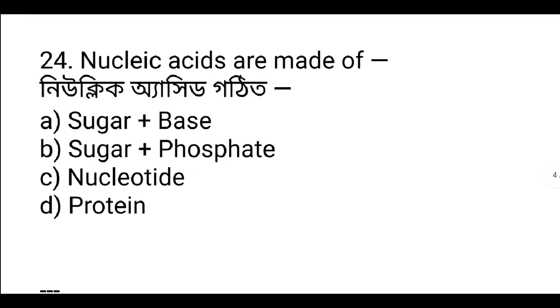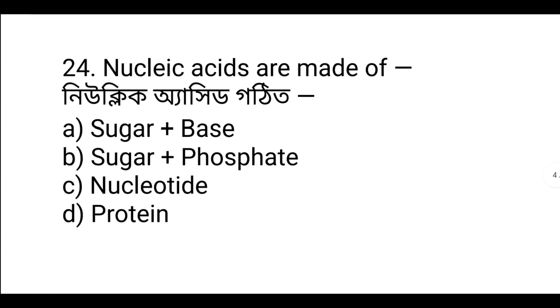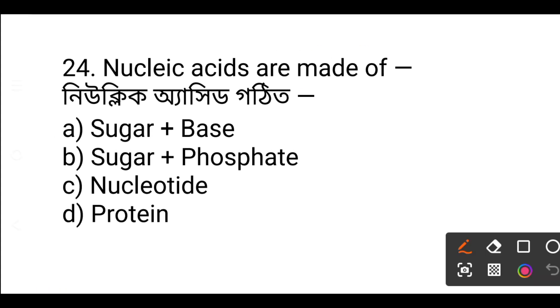Nucleic acid. The monomer of nucleic acid is nucleotide. Nucleotide consists of a phosphate group, a sugar, and a nitrogen base — option C.